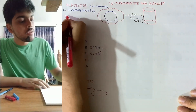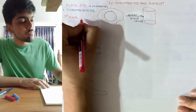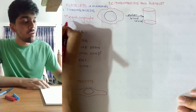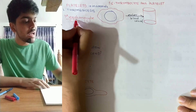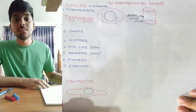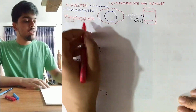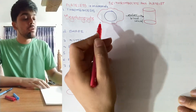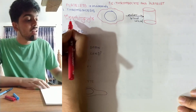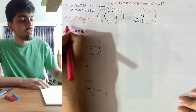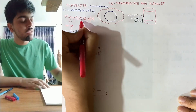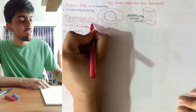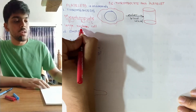Platelet formation takes place from a very large cell that contains a large nucleus, called a megakaryocyte. The name has three parts: 'mega' means huge or large, 'karyo' refers to nucleus, and 'cyte' means cell. So it is a large cell that contains a large nucleus.